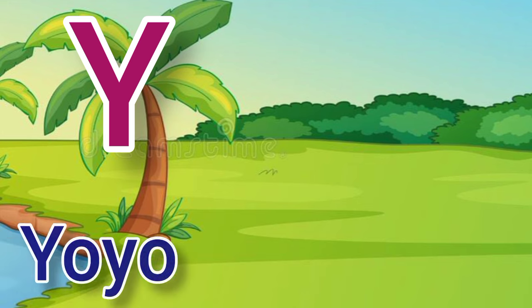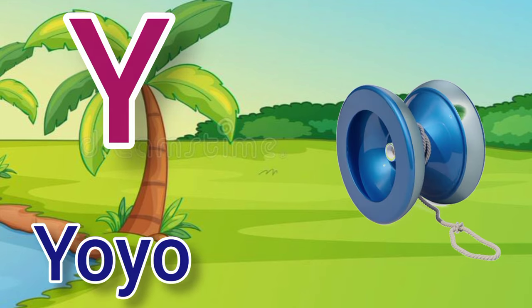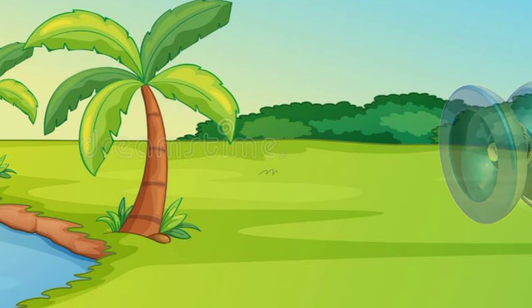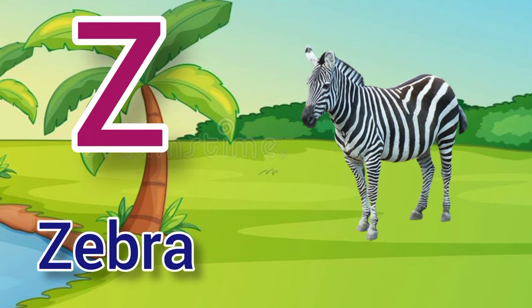Y for yo-yo, yo-yo means yo-yo. Z for zebra, zebra means chithidhar ghoda.